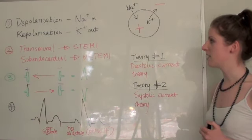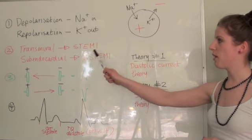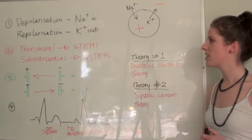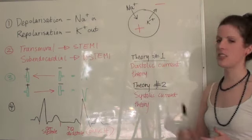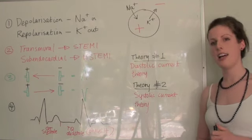The second thing is that in general, not always, but in general a transmural infarct correlates to being a STEMI and a subendocardial infarct translates to being an NSTEMI.